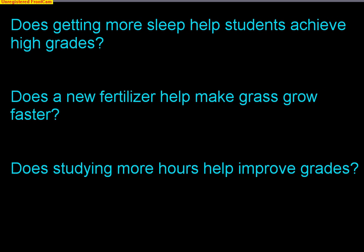We're going to talk a lot more about experiments in the next video, but that's a rough idea. Here are three research questions. Does getting more sleep help students achieve high grades? A lot of students think this calls for an experiment, but this would be really tough to do experimentally, because you would have to make people get more sleep or less sleep, and that's really hard to do. You can make somebody take a hormone pill, but you can't make somebody sleep more or less. This would be a great way to do an observational study — simply get a group of kids with high grades and ask them how many hours they sleep, and get a group with low grades and ask them the same, then try to find a connection. You could say there's an association between getting a lot of sleep and getting good grades. That would be best served as an observational study.